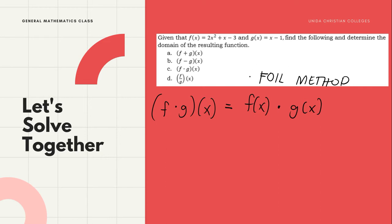So we write f(x) in parentheses: (2x² + x - 3), and g(x) in parentheses: (x - 1). Since g(x) has two terms and f(x) has three, we multiply each term of g(x) by each term of f(x).